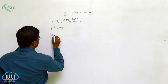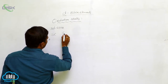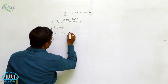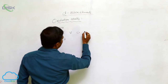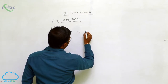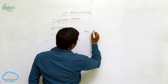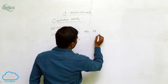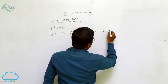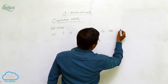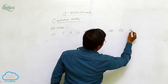The 3D series elements are: scandium, titanium, vanadium, chromium, manganese, iron (or ferrum), cobalt, nickel, copper, and zinc.